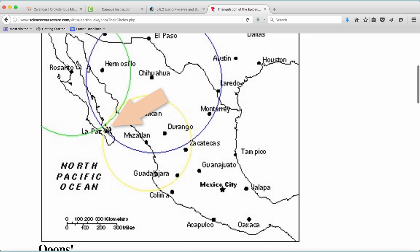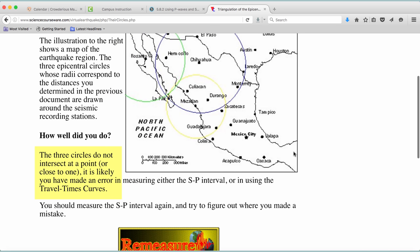I tried this several times for each one of these and it always tells me, 'Oops, the three circles don't intersect,' like I'm a loser and I can't do this. Actually, you're awesome if you get it this close. I got somewhere near La Paz, which is great for the Mexico Quake.